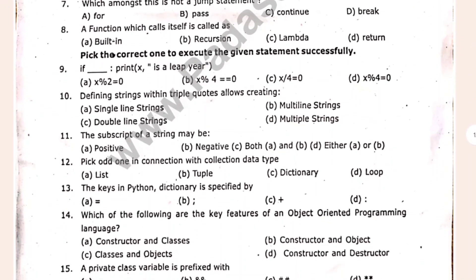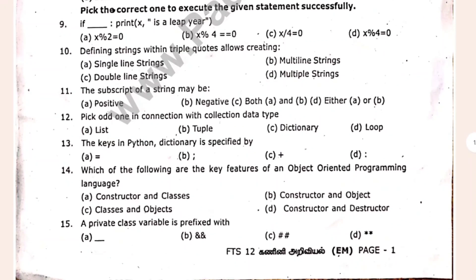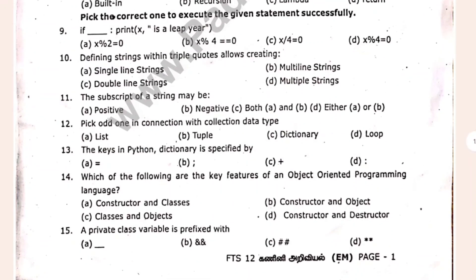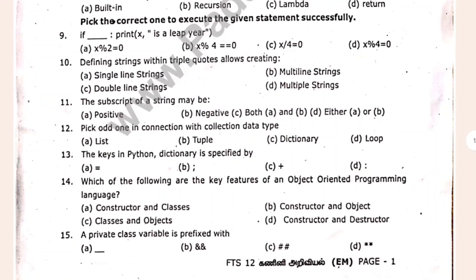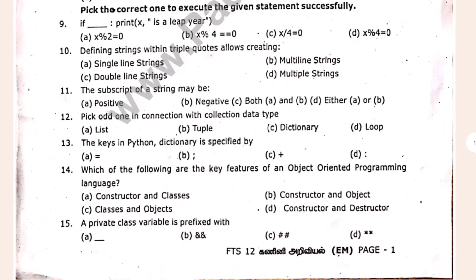9, 10, 11, 12, 13, 14, 15. So 9, 10, 11, 12, 13, 14, 15. Private class variable is prefixed with the dash.